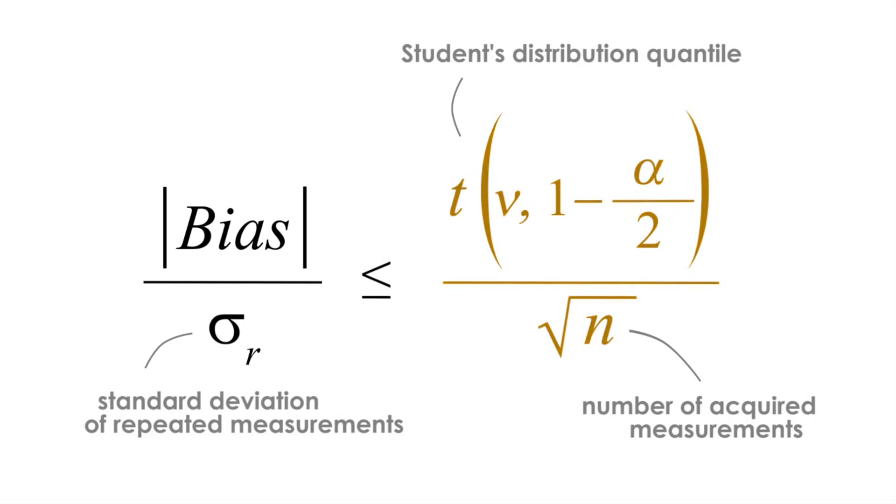The criterion here is changing according to the number of measurements acquired. There are, in fact, three big problems with this formula.